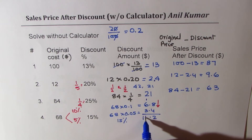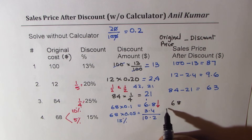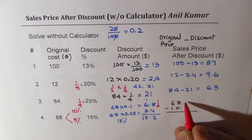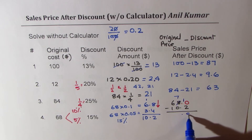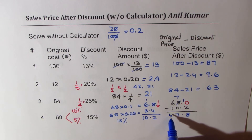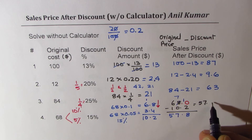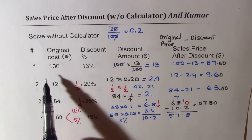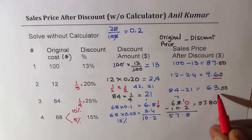Half of 6.8 is 3.4. Since 15% is 10% plus 5%, add them: 6.8 plus 3.4 — 8 plus 4 is 12, carry the 1, giving 10.2. Taking away 10.2 from 68: borrowing makes it 7 and 10, and we get 57.8 as our answer. Prices are normally given in two decimal places, so we write 57.80.